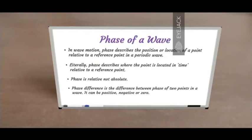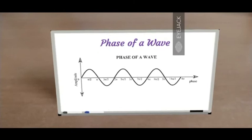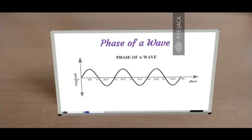Let's look at how phase looks visually. Here's the sinusoidal waveform. The y-axis represents the amplitude, and the x-axis is the angle traversed by the wave expressed in radians. As the waveform follows a sinusoidal path, it starts at zero, reaches a positive extrema at pi by 2 radians, comes to the mean position at pi radians, goes to the negative extrema at 3 pi by 2 radians, and then comes back to the mean position at 2 pi radians. And then this cycle repeats itself.